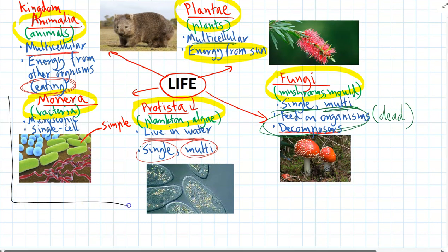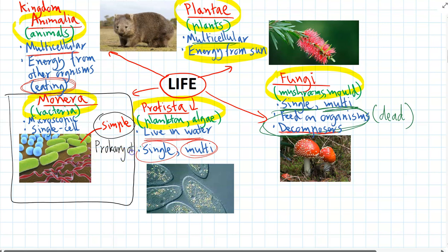Monera are the odd one out because they are the bacteria. They have really simple cells, which makes them prokaryotes — they have prokaryotic cells. They're all single-celled and unicellular, which makes all bacteria microscopic as well. Always remember, Monera is the odd kingdom out because they are prokaryotes.